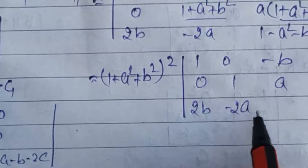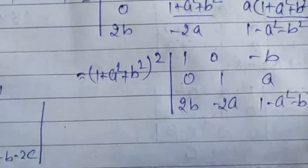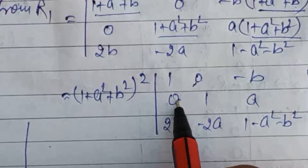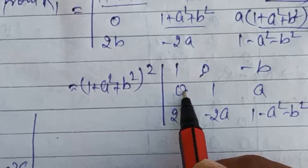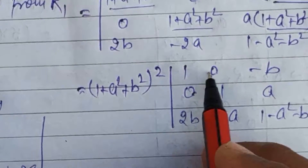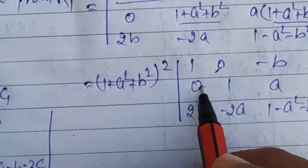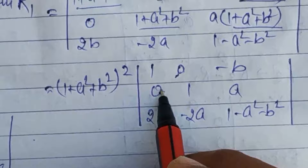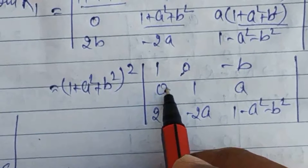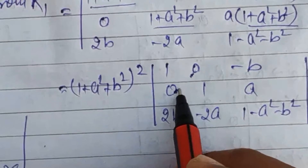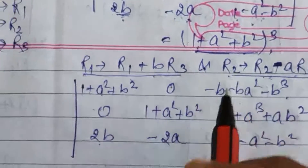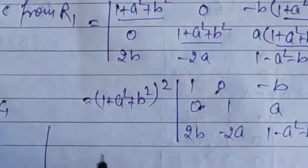Third row: 2b, minus 2a, 1 minus a square minus b square। यह elements हमारे पास बचते हैं। अब चूँकि हमारे पास दो zero आ गए हैं, determinant की properties में यह जरूरी होता है कि यदि हम दो zero बना लेते हैं तो उसके बाद expand कर सकते हैं। Exam में कम से कम दो properties जरूर लगानी चाहिए — वो दो properties मैं ऊपर लगा चुका हूँ।